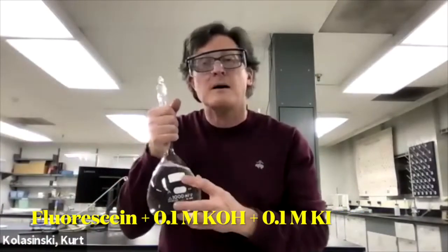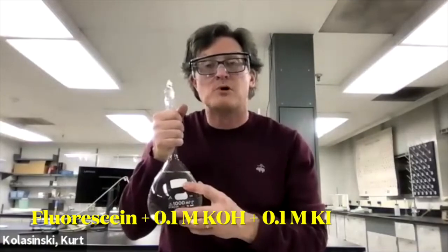What are we going to use as a quencher? We're going to use iodide. Quenching—usually large Z molecules or atoms are better at quenching than low Z. So we're going to use iodide, way down there on the periodic chart. What kind of solution we're going to use? We're going to use a solution of fluorescein in water with 0.1 molar KOH.